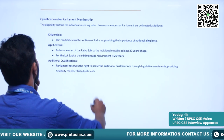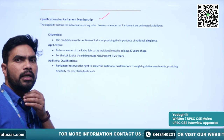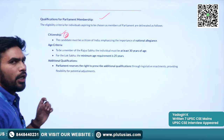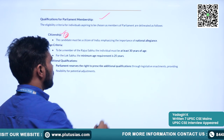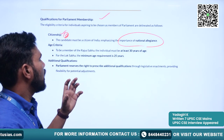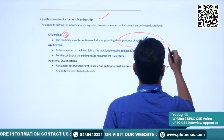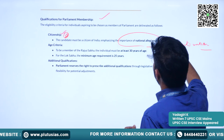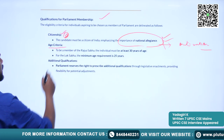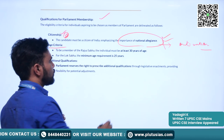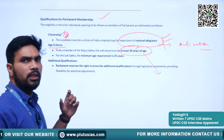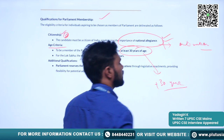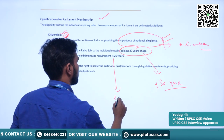Now we will understand the qualifications for being eligible for Lok Sabha elections. First and foremost, the very important criterion is citizenship — he or she should be a citizen of India to ensure national allegiance. Next is the age criterion, which is different for both Rajya Sabha and Lok Sabha. For Rajya Sabha, the person contesting should be at least 30 years of age. For Lok Sabha, the age limit is 25 years.